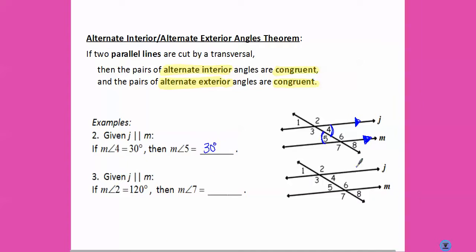Again, those lines are parallel. The measure of angle two and the measure of angle seven are alternate exteriors, so again they're going to be congruent. The measure of angle two is 120 degrees, so the measure of angle seven will be 120 degrees.